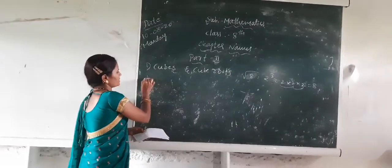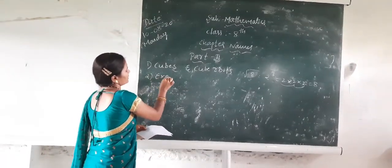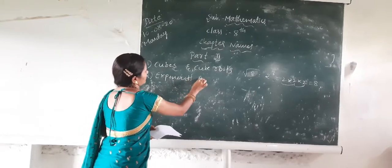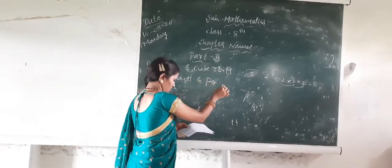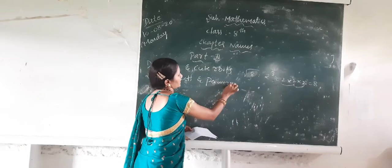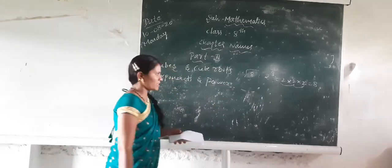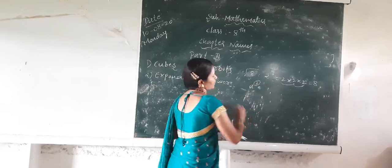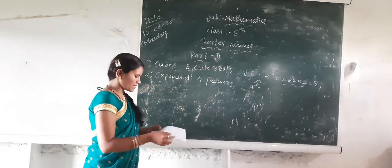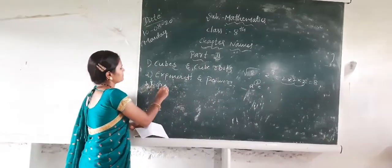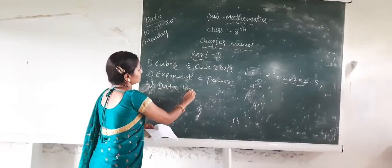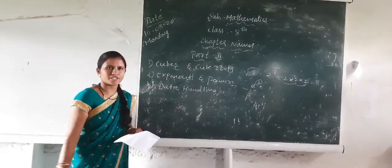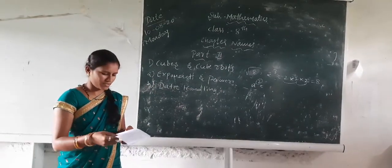The second chapter is Exponents and Powers. You have already studied exponents and powers — for example, a squared means the power is 2. The third chapter is Data Handling. Here, data handling introduction and definitions are given.